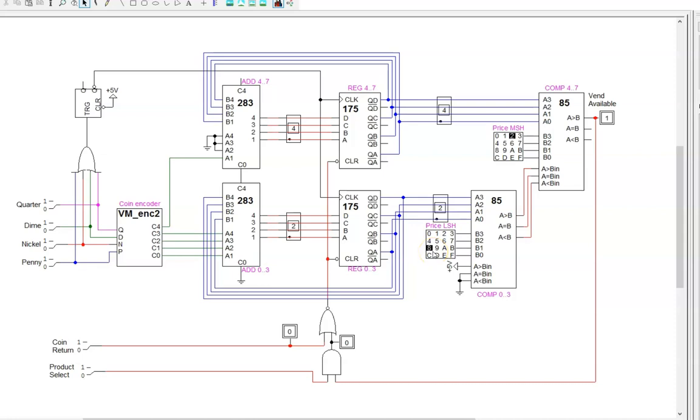Now for a test. I'll flip coin return to clear the register. Then, I'll add 1 penny. The register changes to 1. Then, I'll add 1 nickel. The register increases by 5 to 6. Then, I'll add 1 dime. The register increases by 10 to 16.